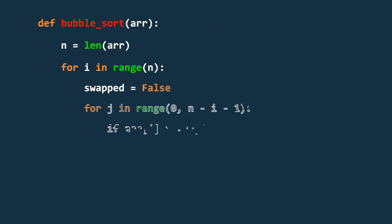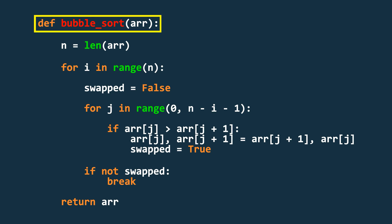Now, let's take a look at the code. First, we define a function and take the array as input. Next, we store the length of the array in a variable, usually named n.